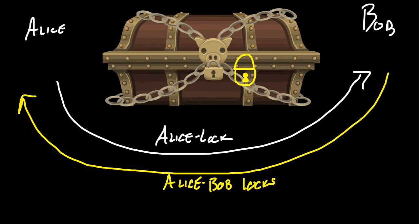So now when the box returns to Alice, it now has these two locks on it. One that was given by Alice and one that was given by Bob. Alice is now going to remove her lock from the treasure chest, and then her servants have to take the treasure chest back to Bob one final time.